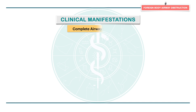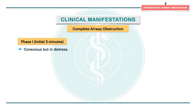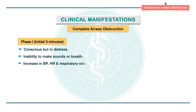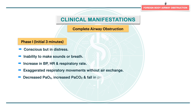In the initial phase, lasting around three minutes, the patient is conscious but in distress. The patient is unable to make sounds or breathe. There is a marked increase in sympathetic outflow leading to increased blood pressure, heart rate, and respiratory rate, exaggerated respiratory movements without air exchange, decreased arterial oxygen tension, increased arterial carbon dioxide tension, a fall in pH, and retraction of supraclavicular and intercostal muscles with cyanosis.